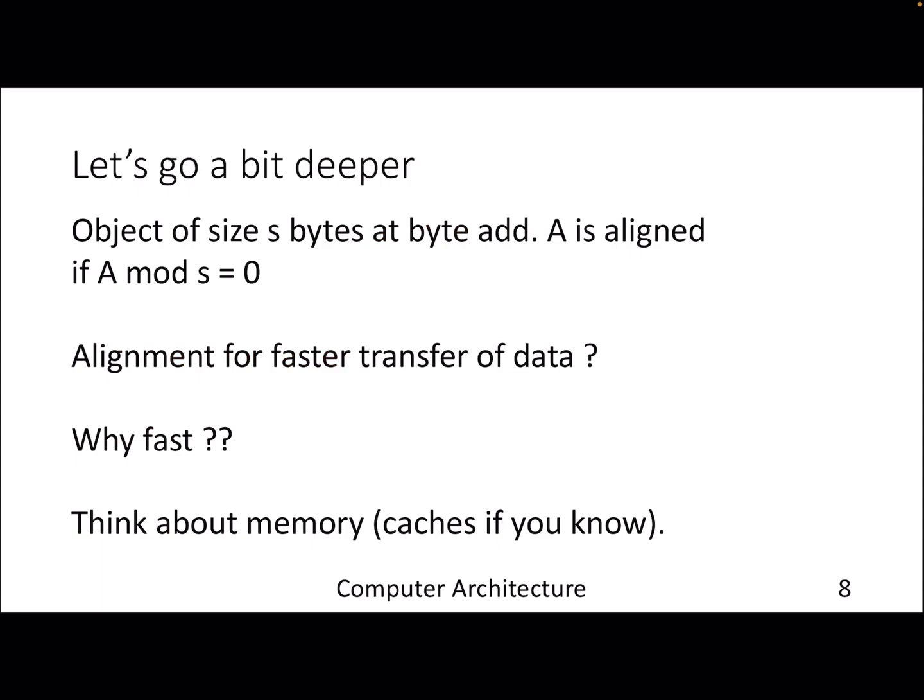As I mentioned, if you want to access two bytes from a byte address, then the byte address modulo the number of bytes should be zero. If you respect this particular condition, then your accesses will be aligned and it will be faster. Why faster? Because if your address is not aligned, you may end up going to the memory twice.